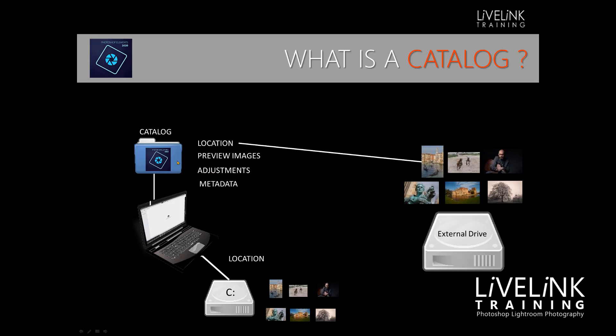Most of the time Photoshop Elements doesn't need the images — it's just when you're doing certain things that it will need them, and that's when it will need this location intact. Now, the first time you launch Photoshop Elements it creates a default catalog file called 'My Catalog' on your hard disk. A single catalog can efficiently handle thousands and thousands of images. You can create multiple catalogues for different purposes, however be aware that Photoshop Elements can only access and search one catalog at a time. So the normal workflow is to use one catalog, and then use tags, ratings, labels and albums to organise your photos.